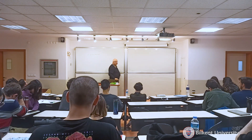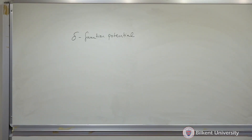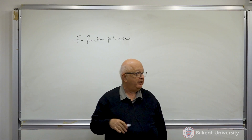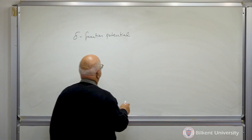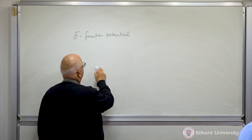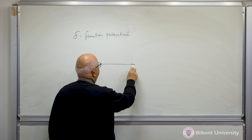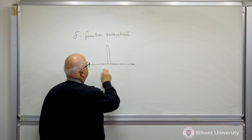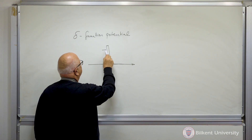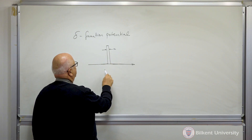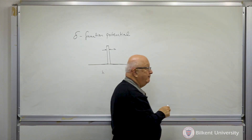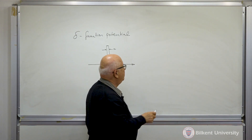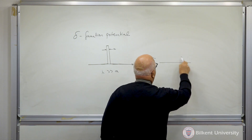The delta function potential is an extremely thin potential. We'll look at both cases when the potential is repulsive and attractive. If you have a very thin potential barrier with width A, and the wavelength of the wave function is much larger than this width, then it may be approximated by a delta function.